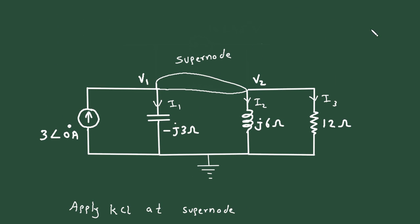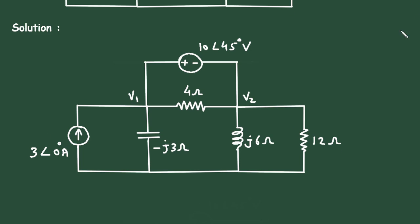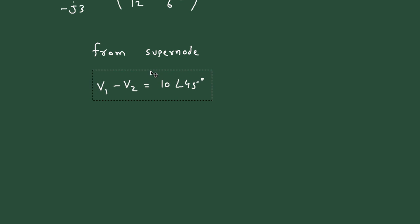From the super node, we can see that V1 minus V2 equals 10 at an angle of 45 degrees. We can ignore the 4-ohm resistor here. This is equation number 2.